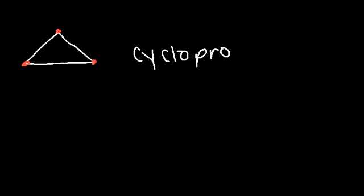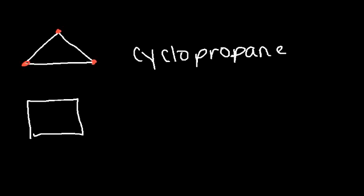With that in mind, what is the name of this particular cycloalkane? Here we have four carbons, and four carbons is associated with butane, so this is called cyclobutane.